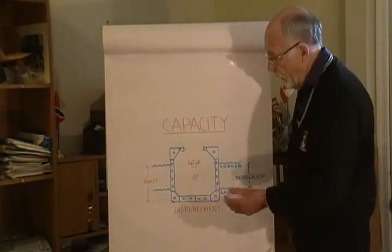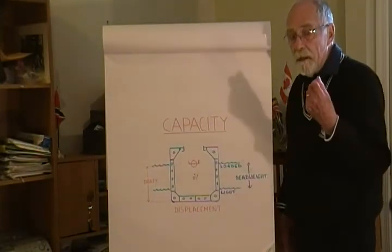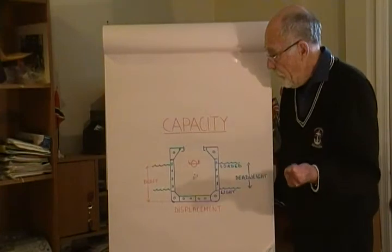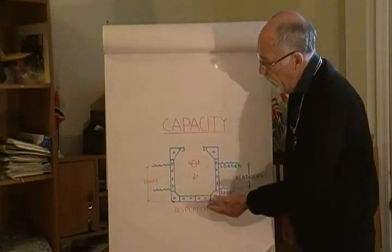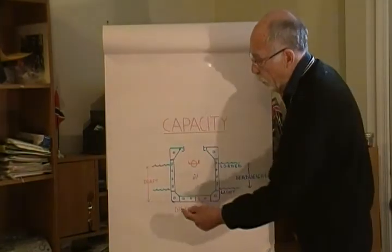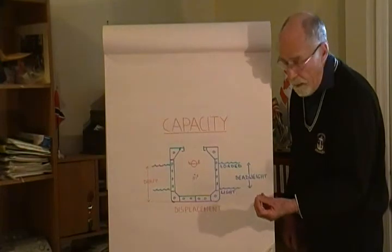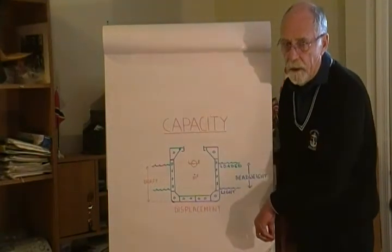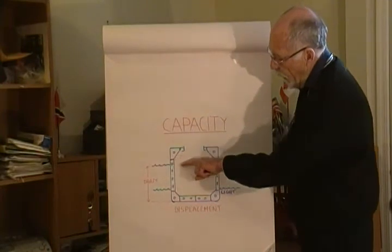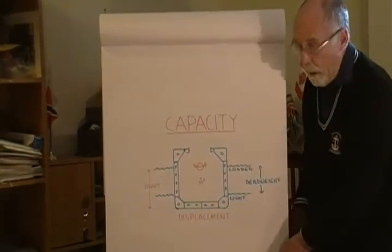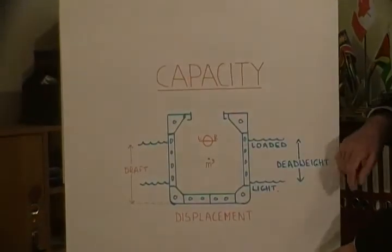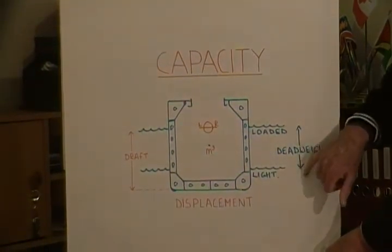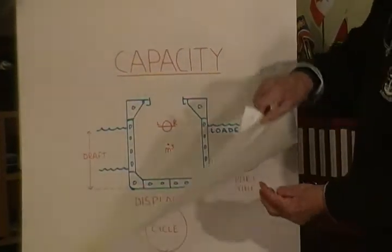The next capacity is by mass. As Archimedes said, a body wholly or partially immersed in a liquid will displace its own mass. So the more we put in, the deeper it's going to go in the water. The depth in the water is called the draft. A ship has a light or empty draft and it has a loaded draft. You cannot go on putting cargo in until the thing sinks, so there is a line on the ship's side called the plimsoll mark, which shows you how deep the ship can be loaded. The difference between the loaded draft and the light draft is called the ship's deadweight carrying capacity — the capacity by mass.